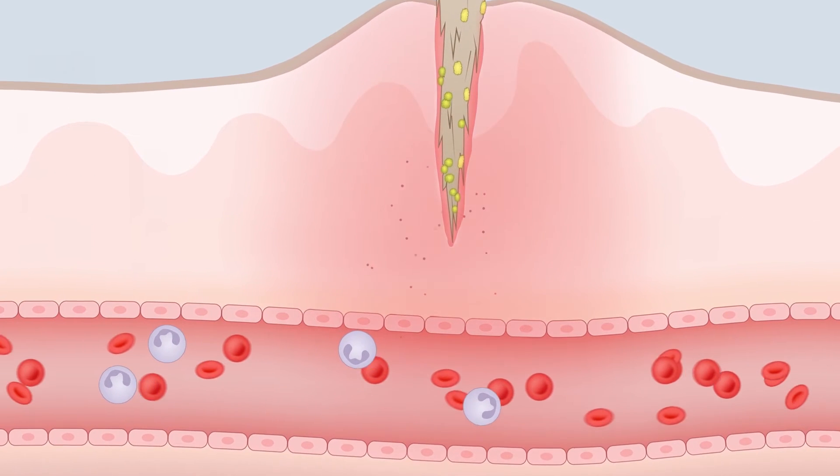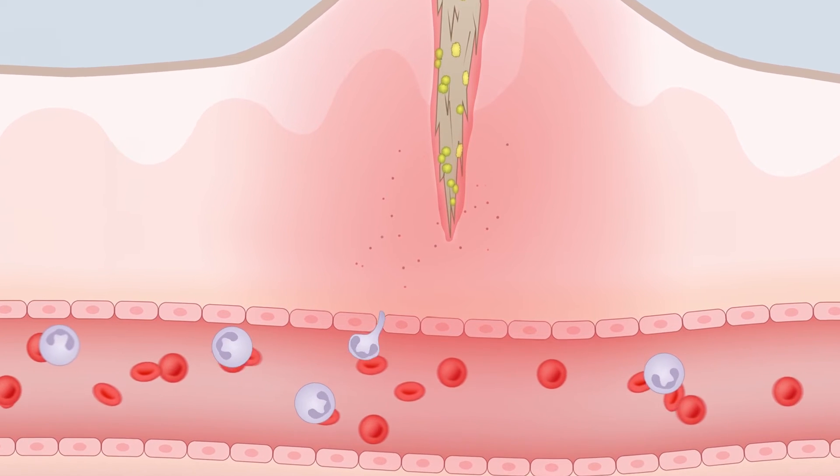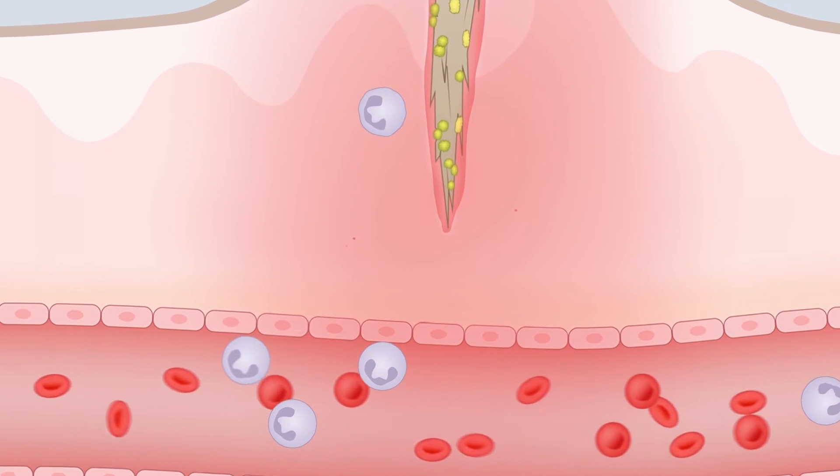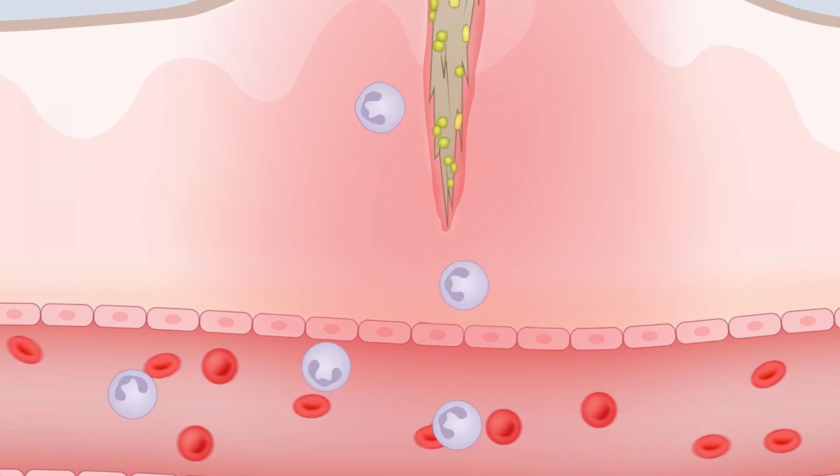As a result, leukocytes, especially granulocytes and macrophages, are attracted to the site of damage. They leave the adjacent blood vessels and penetrate into the damaged tissue.